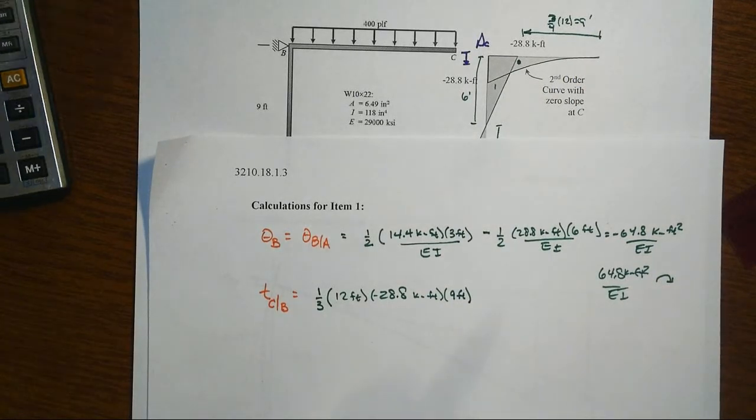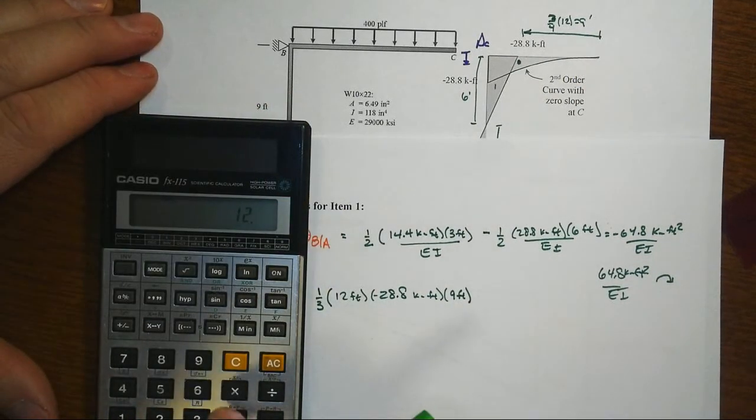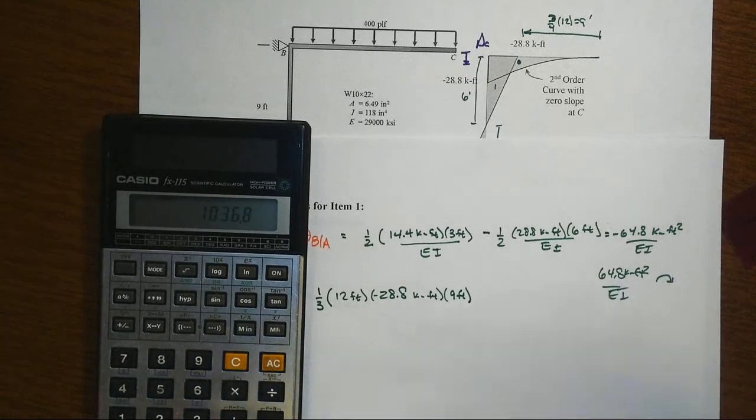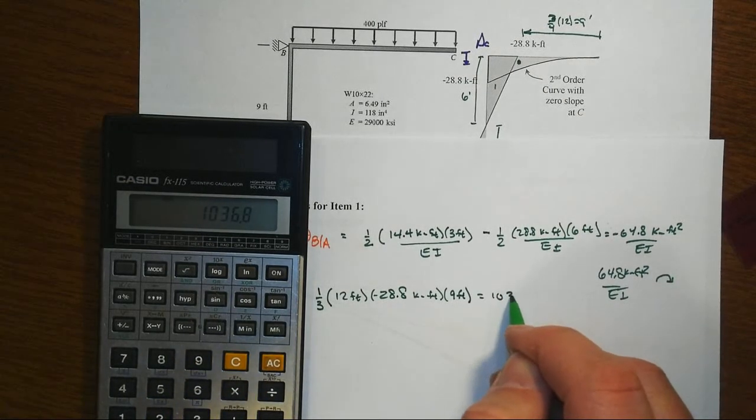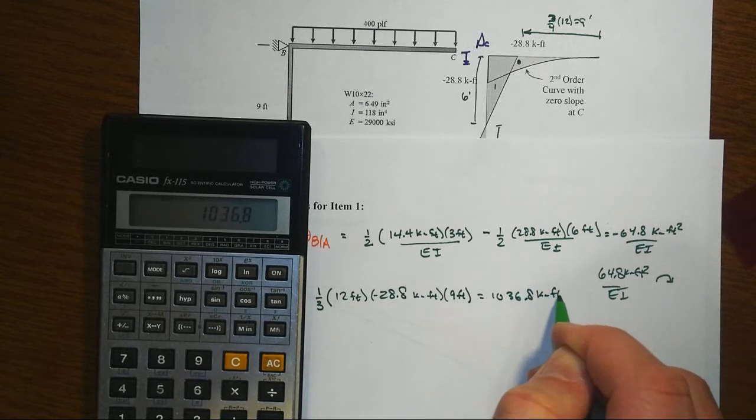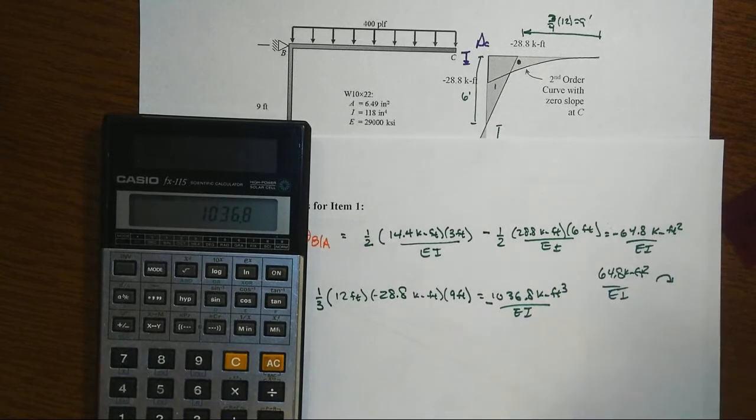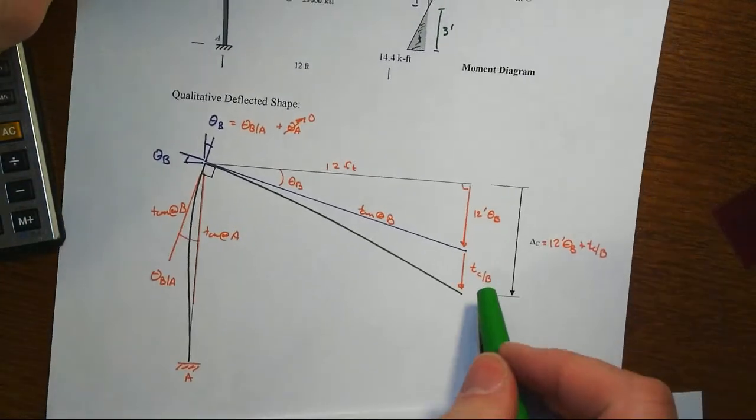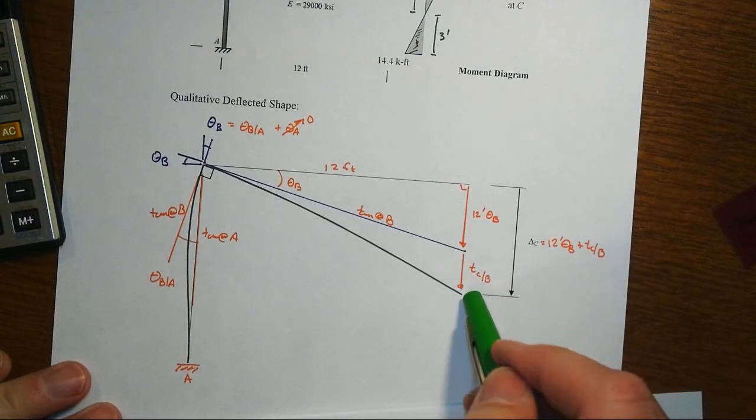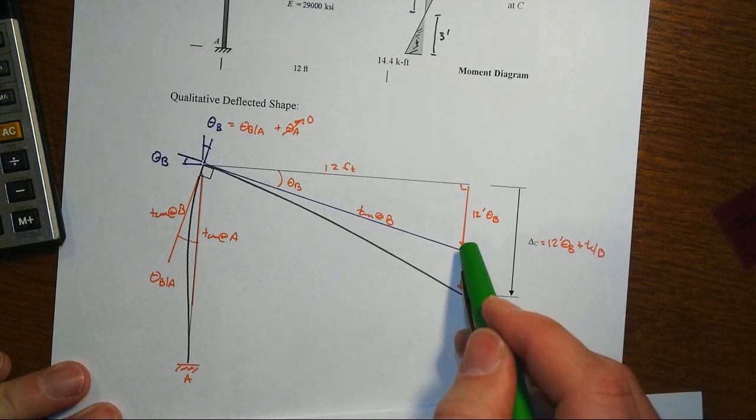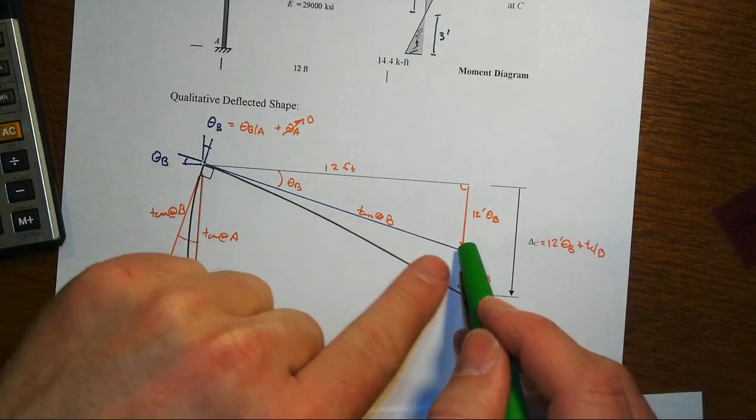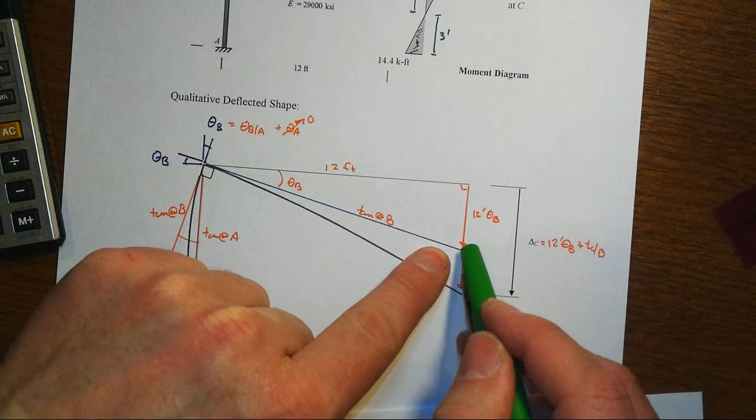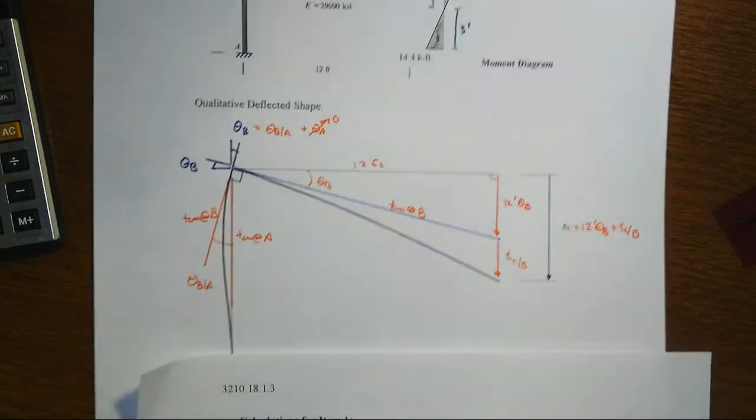And so that will turn out to be 1,036.8 kip foot cubed over EI. It is negative, which means that it goes downwards, which is what we've got shown here, that we're here at point C. At the tangent from the projected tangent at B, we go from there downwards to get to the delta C.